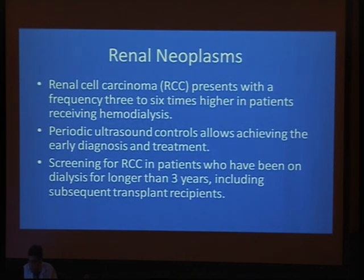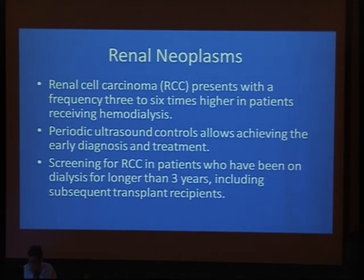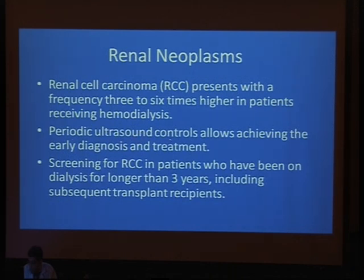What about renal neoplasm? Renal neoplasm may be present at a frequency of about three to six times more than normal patients in those with hemodialysis. So in hemodialysis patients, we can expect the risk of renal cell carcinoma to increase three to six times. Ultrasound surveillance is recommended to allow early diagnosis and early management. It is recommended to do periodic ultrasound for hemodialysis patients.